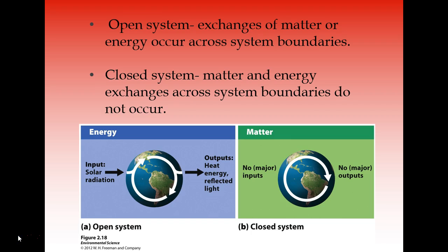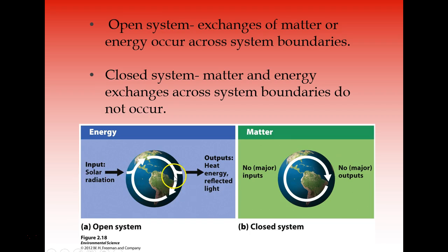In studying energy and matter, it's important to recognize that one of them is an open system and one is closed. Matter is closed because we have no major inputs or outputs — no large amounts of matter coming onto our Earth or leaving in our current time period. The matter we have is pretty much it. Energy, however, is the exact opposite — an open system because almost all energy sources trace back to solar radiation. Solar radiation comes in and our outputs are heat, energy, and reflected light. So there's a constant one-way system where energy is going in and energy is leaving, while matter stays in a very closed system.